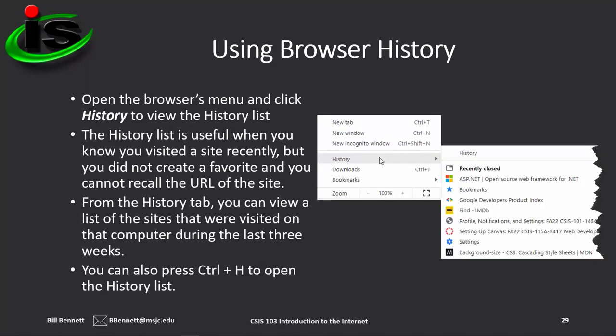As you browse the internet, each page you view is stored in the history list in your web browser. You can modify the history list — delete recently visited sites or go back and recall a recently visited site. You'll find the history option inside your web browser's main menu, or you can press Control-H on your keyboard to open the history list.